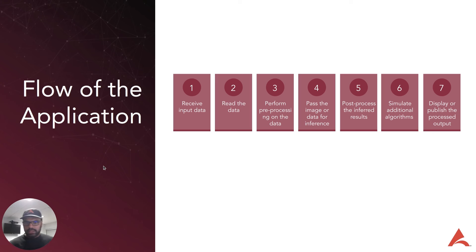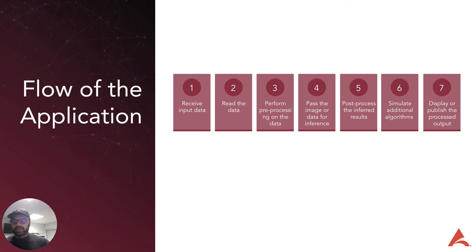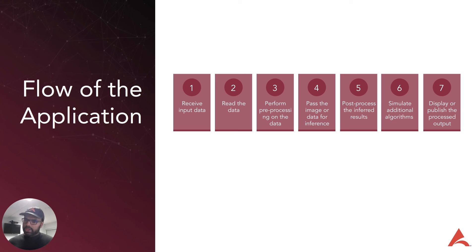The application flow has seven standard steps. Step one: receive the input data. Step two: read the data coming in from the cameras. Step three: perform pre-processing on the data, based on what the particular model expects. Step four: pass the image data for inference — running inference on the images. Step five: post-process the inferred results. Step six: simulate additional algorithms, since most computer vision applications have additional pre- and post-processing logic for handling the data.